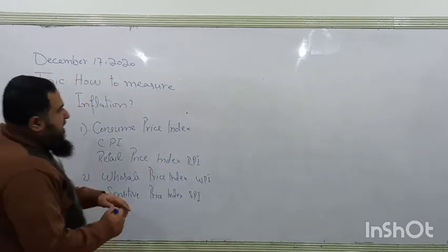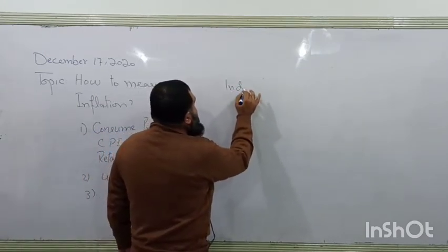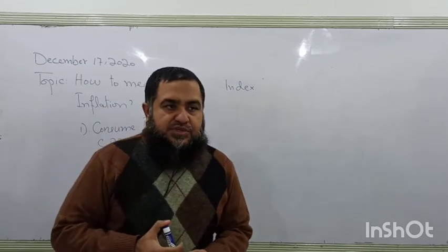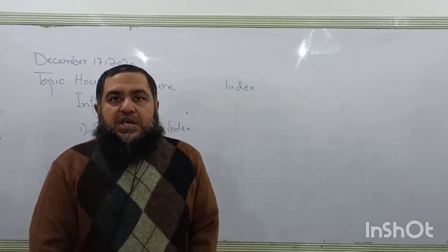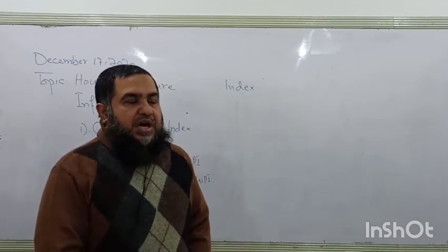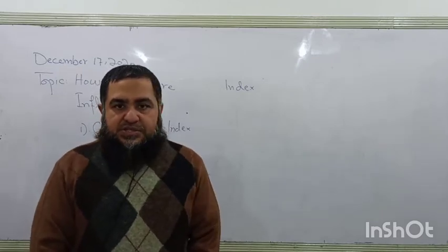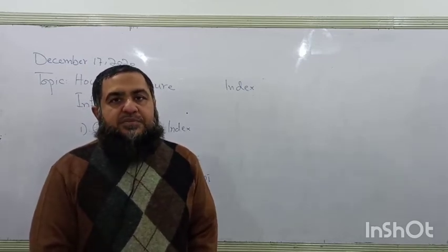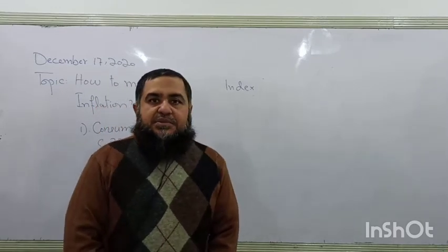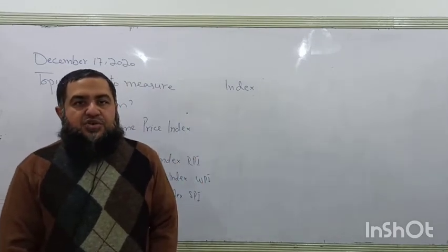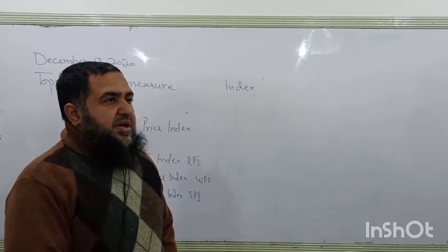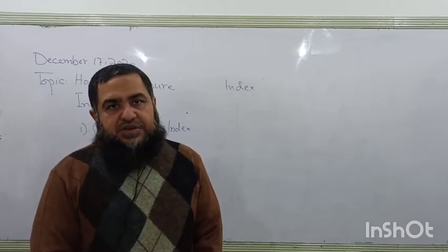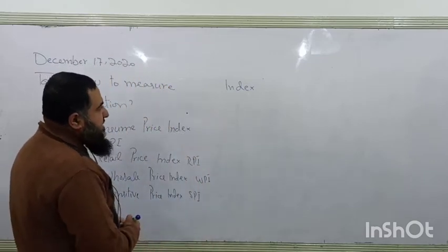First, let me define what an index number is. An index is basically an average number or average value. When we talk about the retail price index, we take the average values of the retail prices of all goods included in our basket. If that index number grows over time, it means inflation; if it decreases, we have deflation.